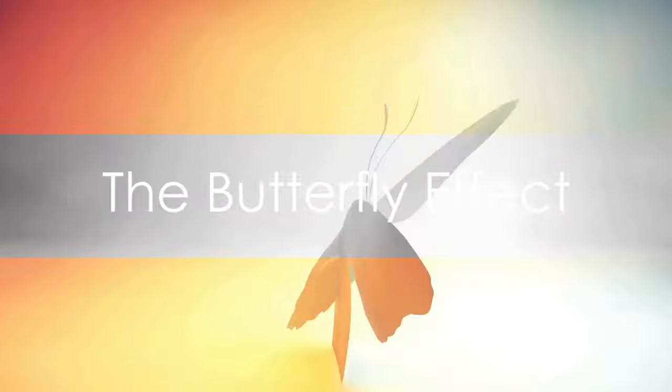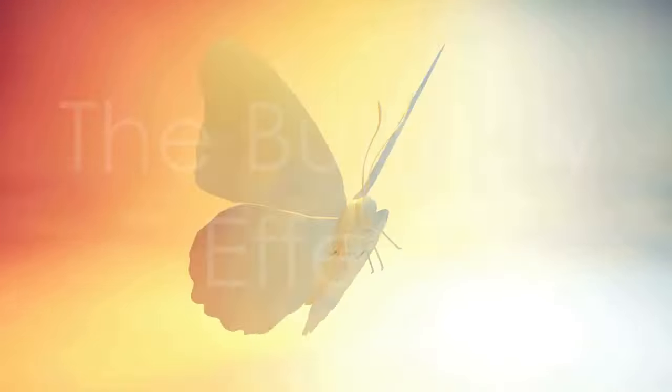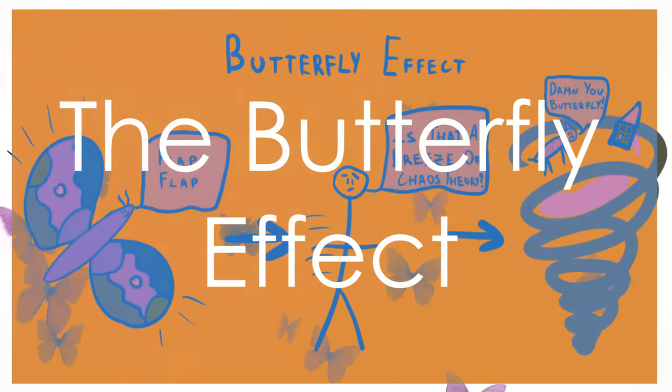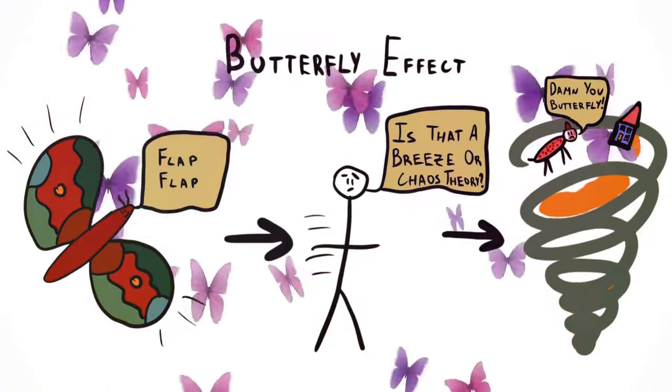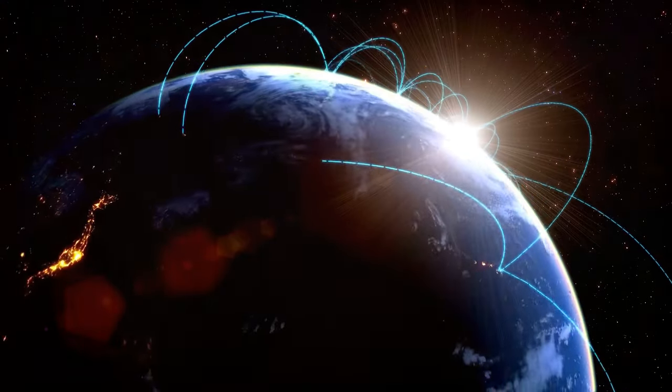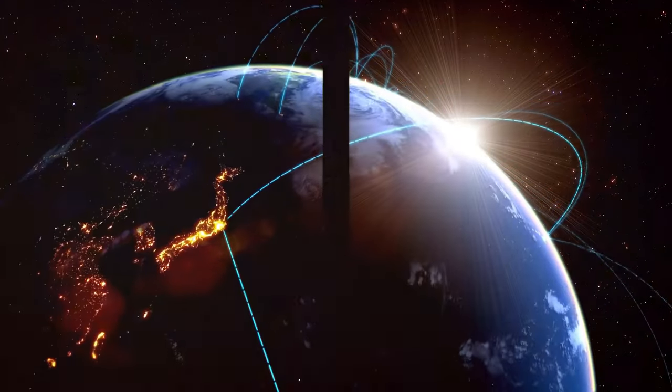Ever heard of the butterfly effect? It's not just a movie. It's a concept in chaos theory where a small change in a system can result in large differences in a later state. Think of it like this: a butterfly flapping its wings could potentially cause a tornado weeks later halfway across the world. It's a reminder of how interconnected our world truly is.